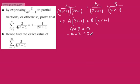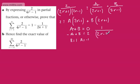Adding these two equations together, A and negative A cancel and we get 2B equals 2, so B equals 1 and A equals minus 1. We can now write the partial fractions as 1 over 2r minus 1 minus 1 over 2r plus 1. That is expressing it in partial fractions.